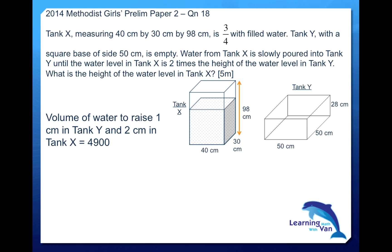But what is the total volume of water in the tank? This is what we have just worked out: 88,200 centimeter cubed. So you need to think in terms of how many groups can 88,200 centimeter cubed give us? This division is as good as saying 88,200 divided by 4,900, that will give us 18 groups. Eighteen groups of every increment or every rise in 1 centimeter in Tank Y and 2 centimeter rise in Tank X.